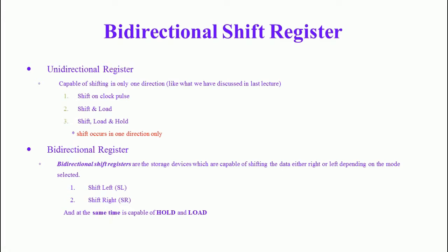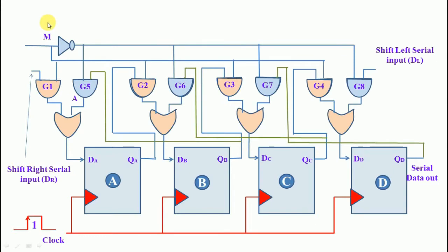Now we are going to see the detailed description of the bi-directional shift register and its working function. This is the construction of the bi-directional shift registers. All the flip-flops are connected to a single clock pulse, and one control signal is used. This control signal is directly connected to G1, G2, G3, and G4. The control signal is also given to a NOT gate, whose output is connected to G5, G6, G7, and G8.